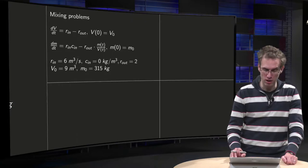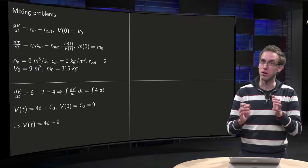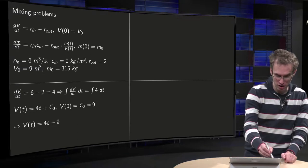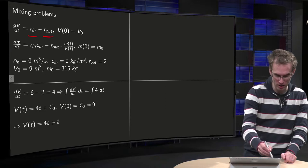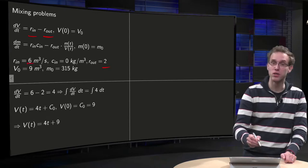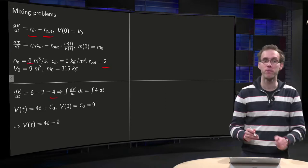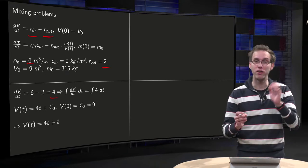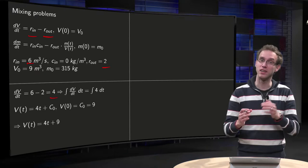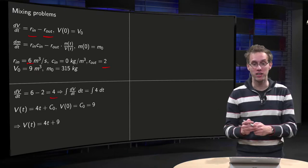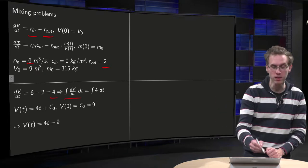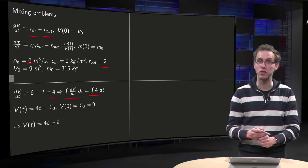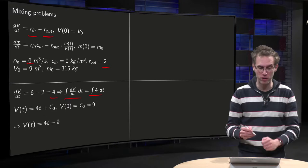Let's see how our differential equation becomes with those parameters. First of all, we have dV/dt equals r_in minus r_out, r_in 6, r_out 2, so we get 6 minus 2 equals 4. So dV/dt equals 4. Well, that's standard, it's the very first case we did. You can integrate on the left and right hand side with respect to t.